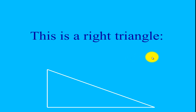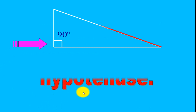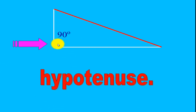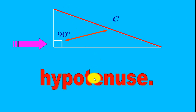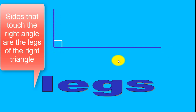So this is a right triangle. We call it the right triangle because it contains a right angle — this is the right angle. Now across the right angle, we call this side of your triangle your hypotenuse. We usually label this side as side C. The sides containing the right angle will be the legs of your right triangle.